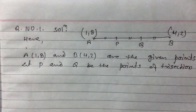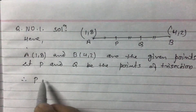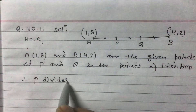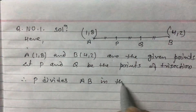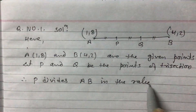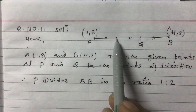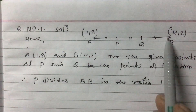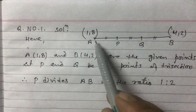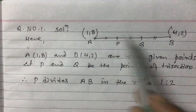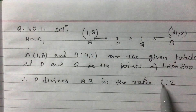Therefore P divides AB in the ratio 1:2. Look at it — AP is one part and PB is two parts. So if this is 1 then this part is 2, so the ratio is 1:2. This is M1 and M2.